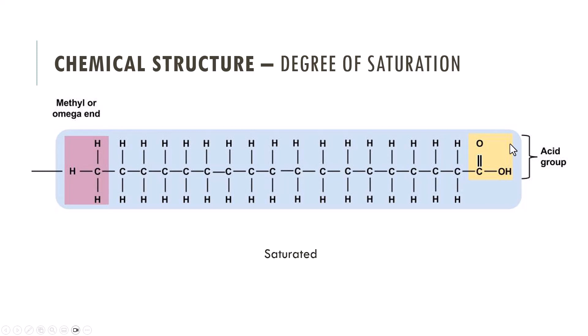The second way we tell the difference between fatty acid chains is the degree of saturation. Saturated fats are completely hydrogenated. Hydrogenated is another term that is similar to or can be used in place of saturated.